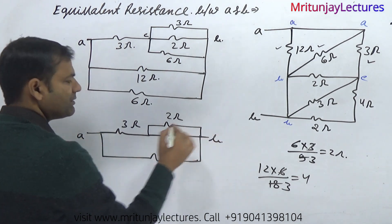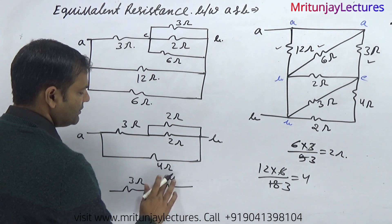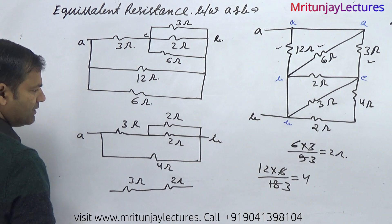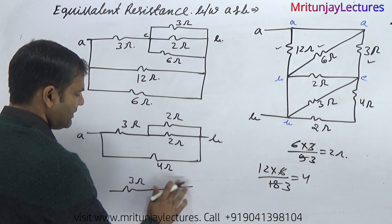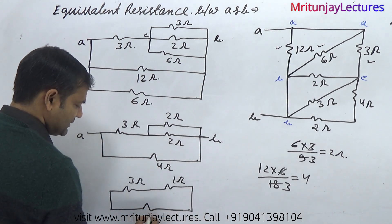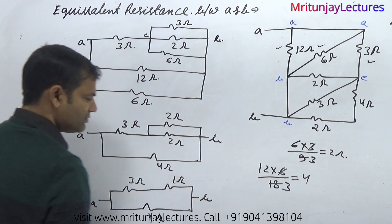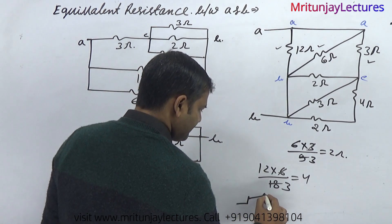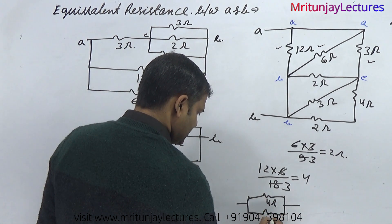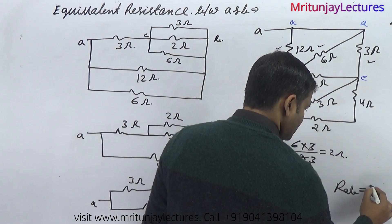That is A and that is B. These two — that is 3 ohm and that is 2 ohm. Combination of these two that is 2 ohm. Both are in parallel, that is why 1 ohm. And here that is 4 ohm — that is A and that is B. Combination of these two: R of A, B that is 4 ohm and 4 ohm.